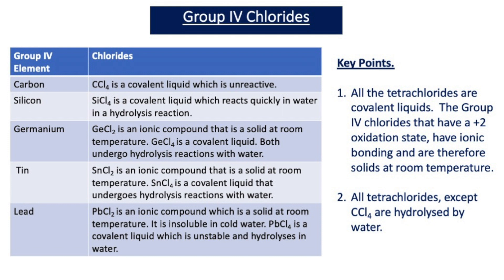Tin forms two different chlorides: SnCl2, where the tin is in the plus 2 oxidation state — SnCl2 is an ionic compound that is a solid at room temperature. The other chloride that tin forms is SnCl4, where the tin is in the plus 4 oxidation state, and this is a covalent liquid that undergoes hydrolysis reactions with water.